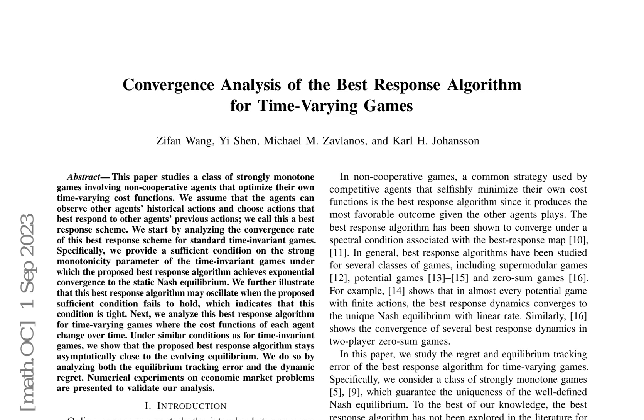The paper investigates the convergence properties of the best-response algorithm in time-varying games, where non-cooperative agents optimize their own time-varying cost functions. It first analyzes the convergence rate of this best-response scheme for standard time-invariant games, providing a sufficient condition on the strong monotonicity parameter for exponential convergence to the static Nash equilibrium.